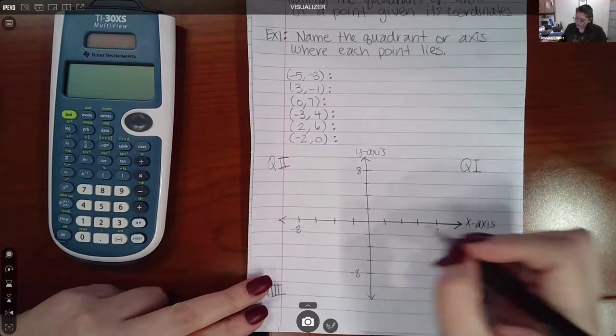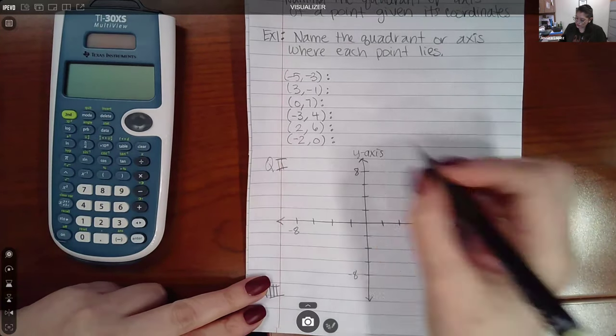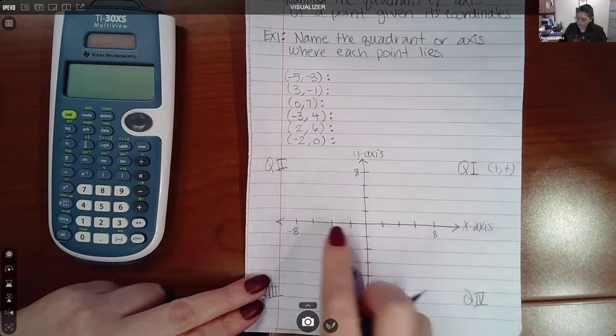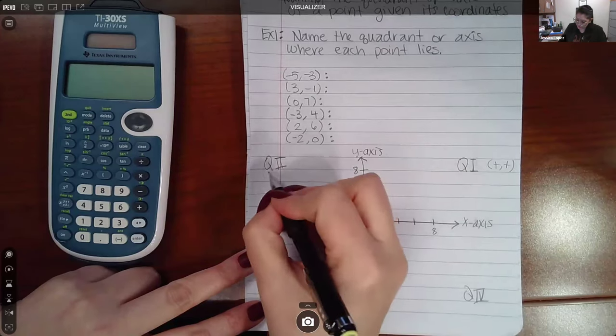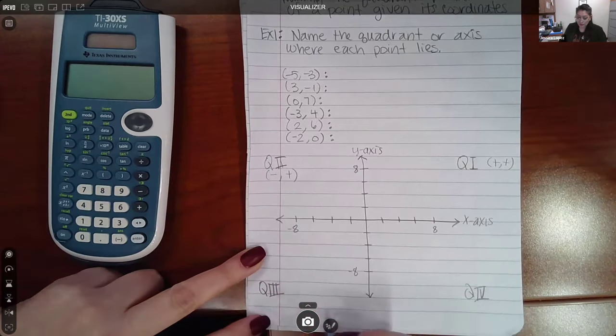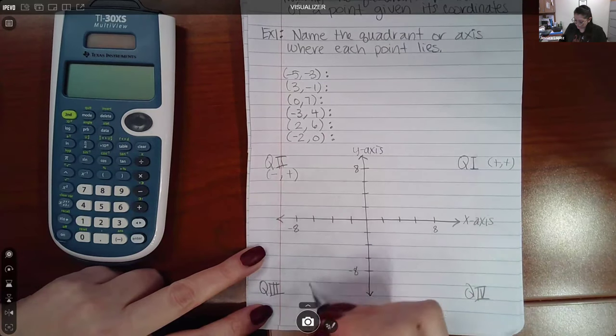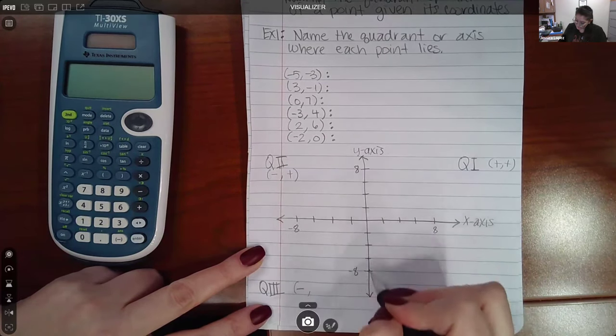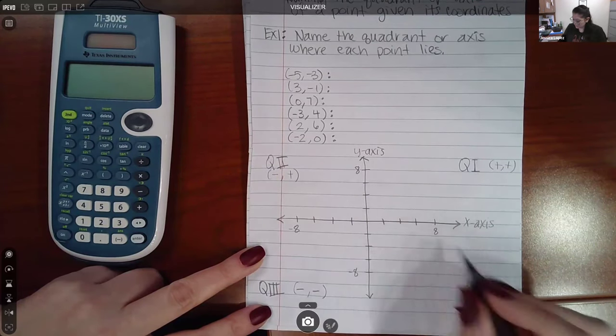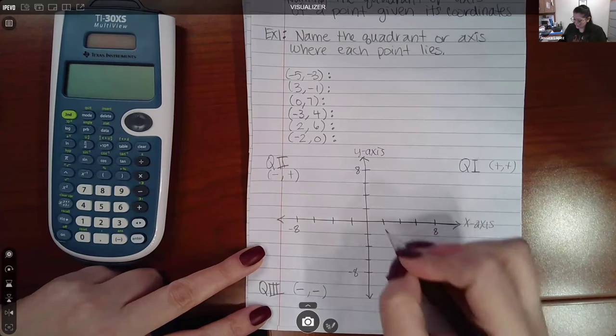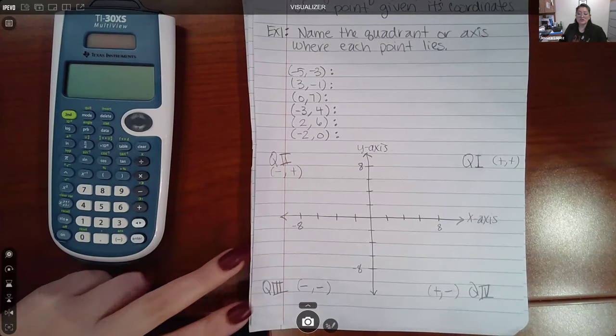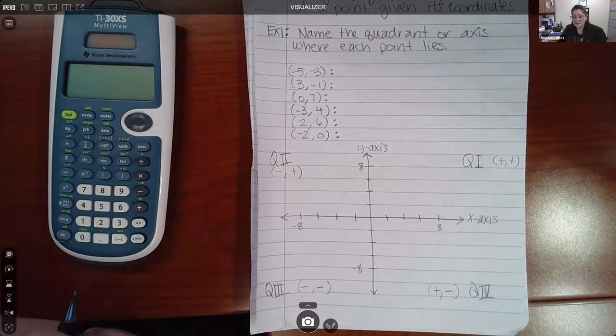Now if you notice, the values of the x-coordinates and the y-coordinates in quadrant one are positive and positive. The signs in quadrant two for x are negative, but then for the y values are positive. For quadrant three, the signs for the x values are negative, and the signs for the y values are also negative. In quadrant four, the x values are positive and the y values are negative. So notice that there's different sign conventions for each of the four quadrants.